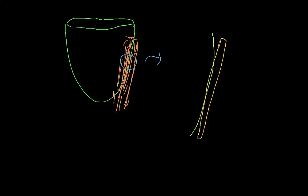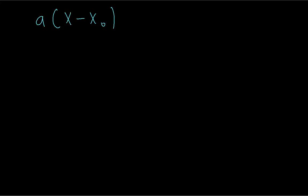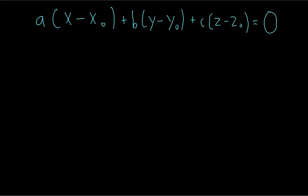The tangent plane represents the linear function which best approximates the actual function around a certain point. We know that any plane has an equation of this form, and let's say we're trying to find the tangent plane at some point x₀, y₀, z₀ on the function f(x, y).